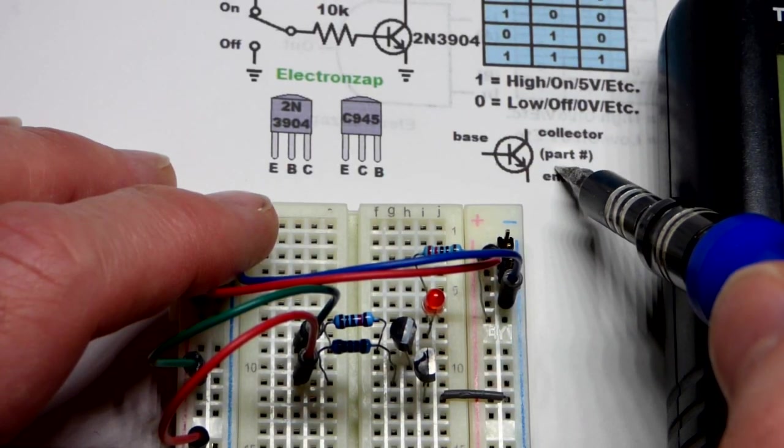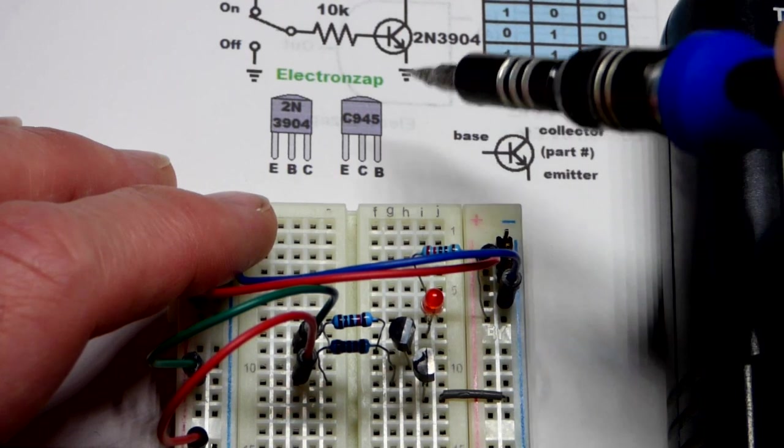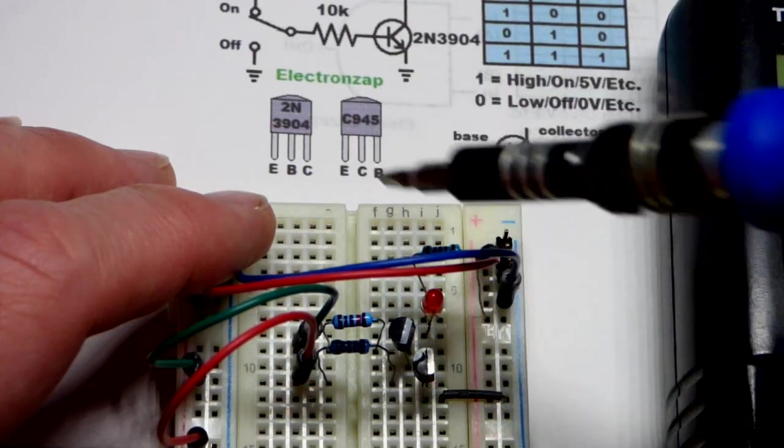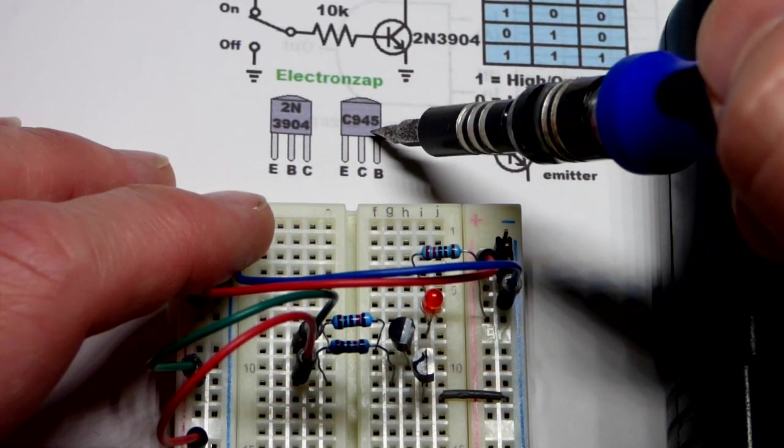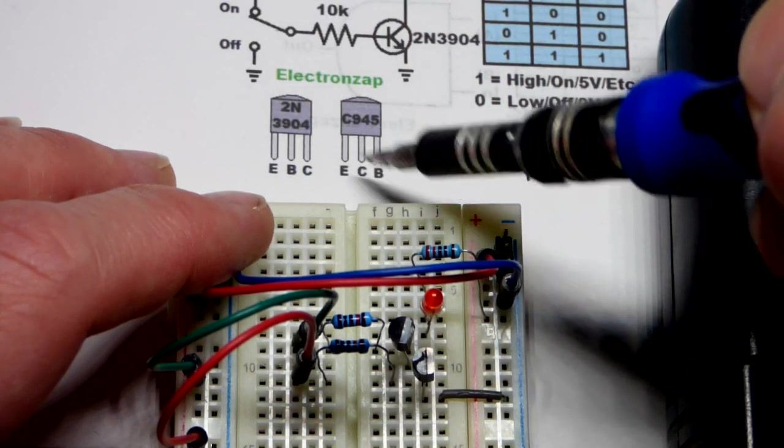And usually, there's a part number next to it. You don't have to use that part number, but you got to use a transistor that can handle the load. This one could also, any transistor can handle a red LED, all the ones I know of. And the main thing, though, is this one has a different pin layout.